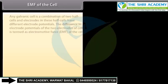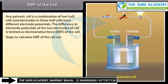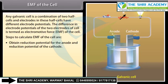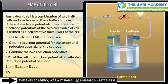EMF of the Cell: Any galvanic cell is a combination of two half cells, and the electrodes in these half cells have different electrode potentials. The difference in electrode potentials of the two electrodes is termed as the electromotive force (EMF) of the cell. EMF of the cell = Reduction potential of cathode − Reduction potential of anode, i.e., E(cell) = E(cathode) − E(anode), or E(cell) = E(right) − E(left).